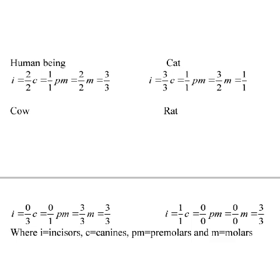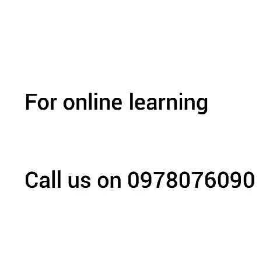The same method applies to other animals such as the cat, cow, and rat. That is how we find the dental formula of an animal. Make sure the number of teeth in the upper and lower jaw represent only half of the animal's mouth. Thank you so much for watching — call for more videos on biology and other subjects.